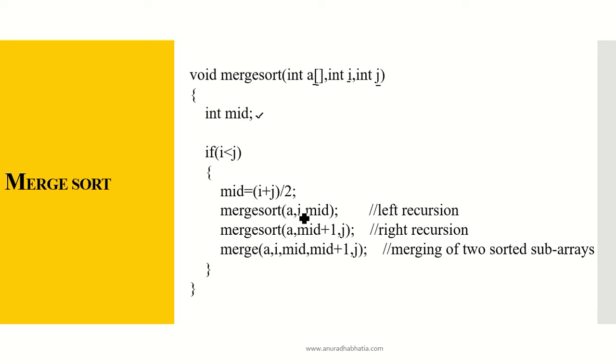Mergesort(A, i, mid). That is to have the left recursion. That is on the array B, I need to merge it. And mergesort(A, mid+1, j). If this was my array and let us assume this was my mid, then mergesort(A, i, mid) will be following this path and A, mid plus 1 to j will be following the right recursion.